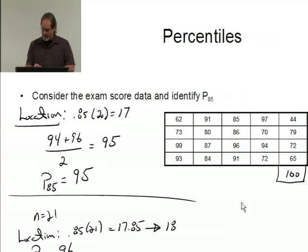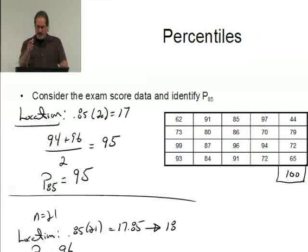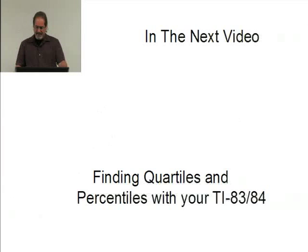If I were to add one more value, my percentile would become 96. So there's quick examples of having both an integer value end up when I'm looking for percentile and a non-integer value and how you handle it. Now like I said in the next video, what we're going to do is take a look at finding quartiles and percentiles using the TI-83 or 84.